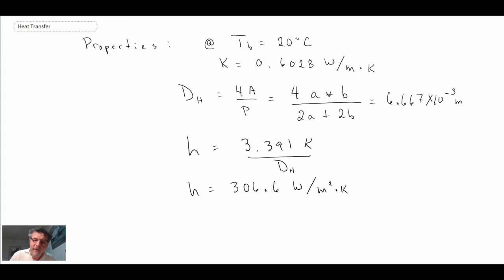And we get this value: 306.6 watts per meter squared kelvin for the convective heat transfer coefficient. Now that's kind of a high value, although we're dealing with water and consequently we would expect it to be quite high.